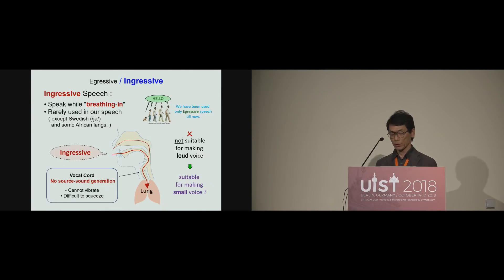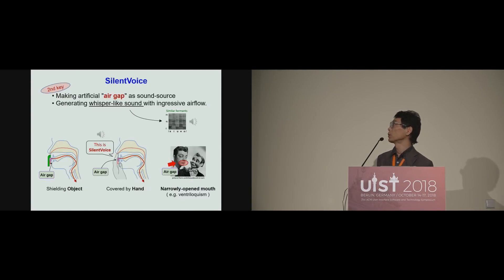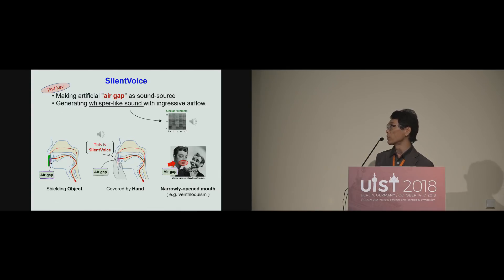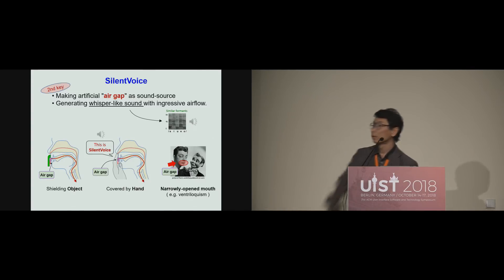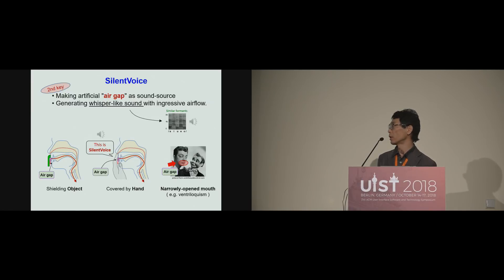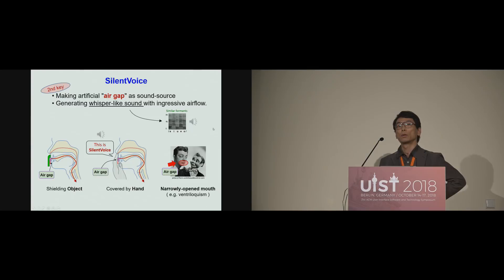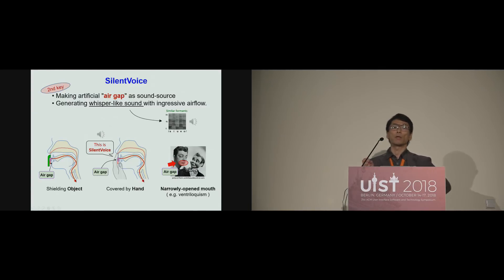The second question is: where is the sound source? The second key of silent voice is making an artificial air gap as the sound source. For example, put some ring-shaped object in front of the mouth, or cover the mouth with your hand. Narrowly opening the mouth like ventriloquism is also effective for making an air gap. This air gap generates a whisper-like sound with ingressive airflow. This is the real recorded sound of silent voice.